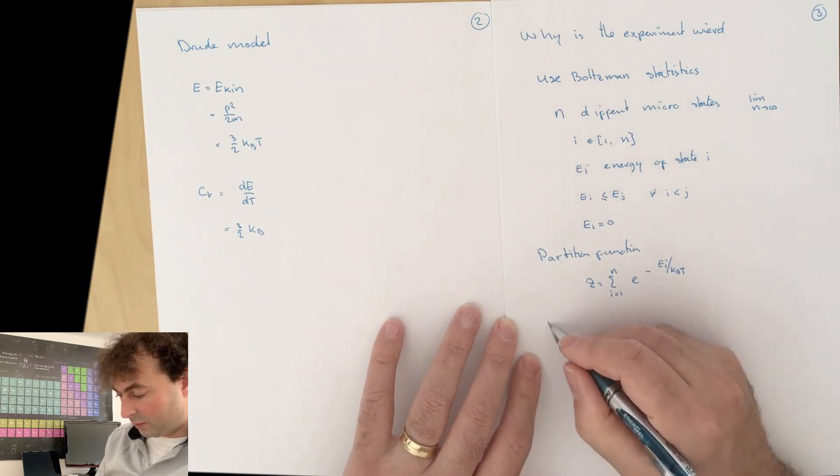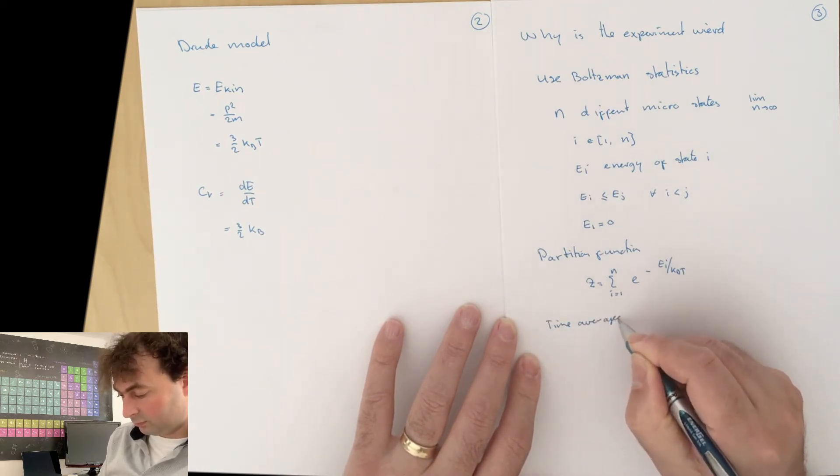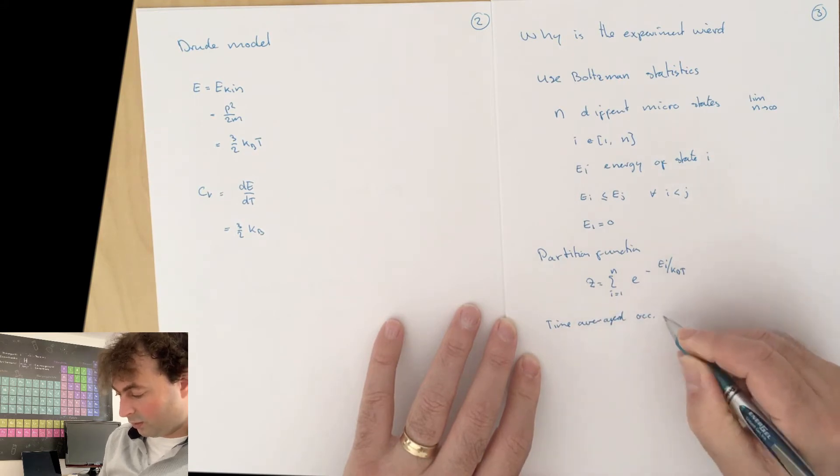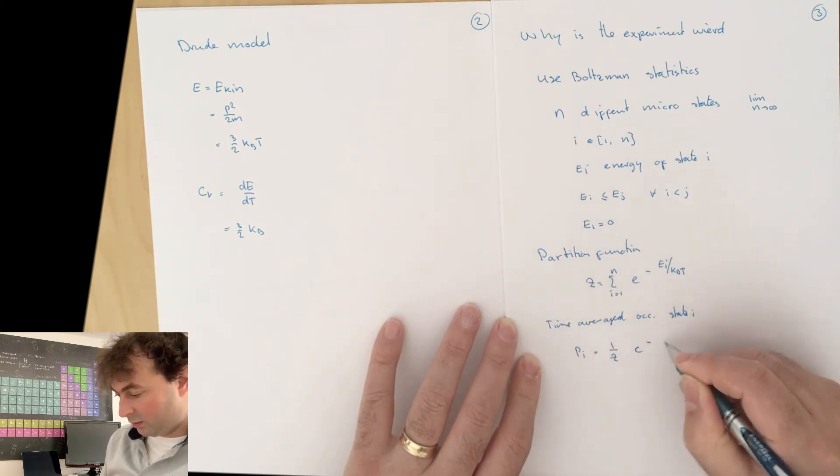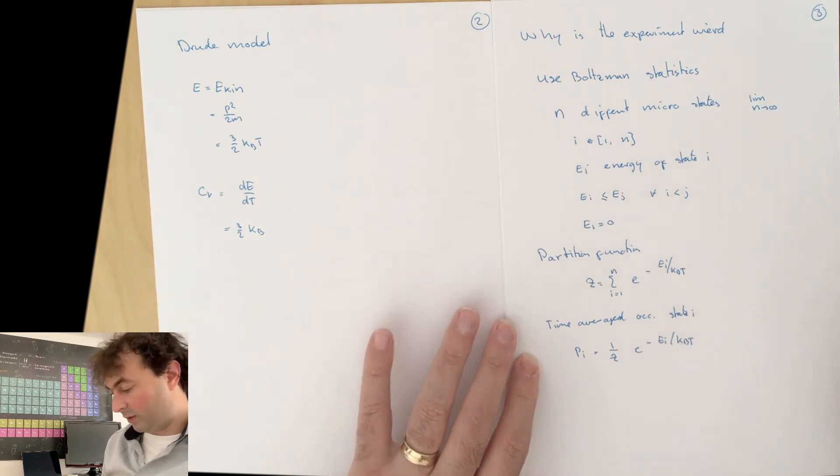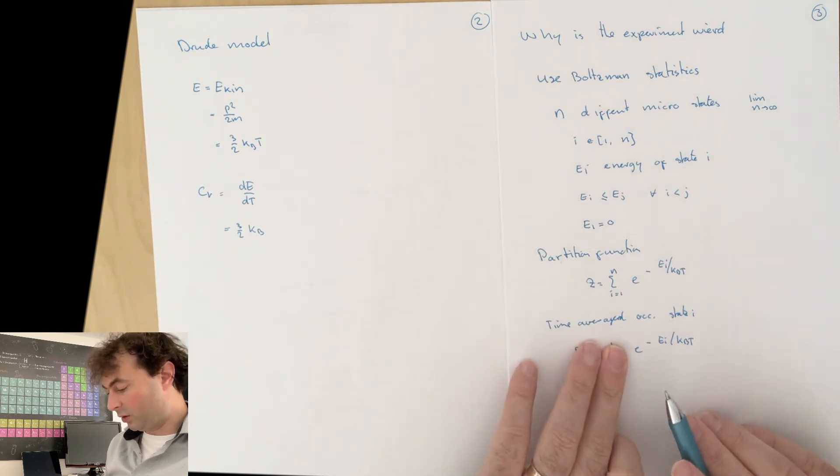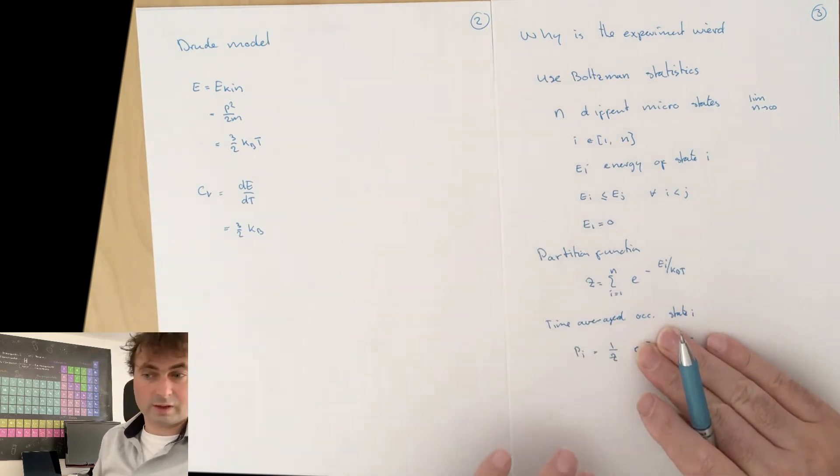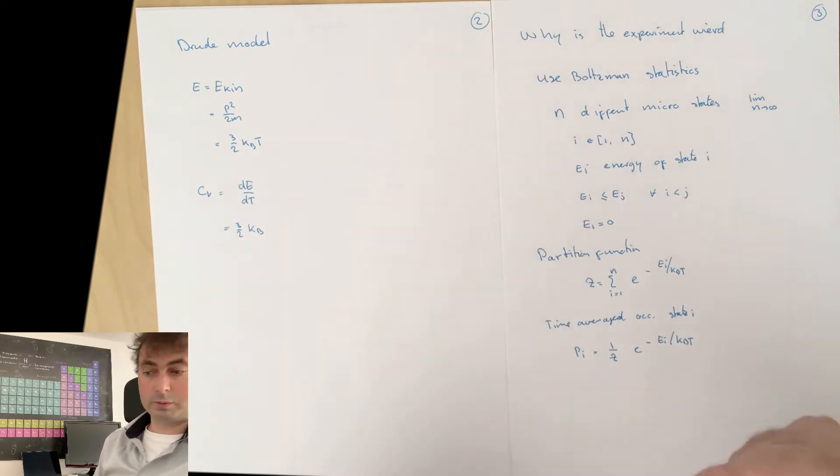a sum over all states, E to the minus EI divided by k Boltzmann T. And the time averaged occupation of state I is then given by PI is 1 over Z, E to the minus EI divided by k Boltzmann T, such that that's the probability. 1 over Z is the normalization, that the sum over all probabilities is 1.